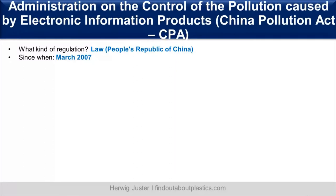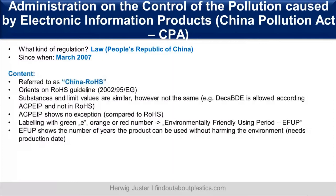The third one is the Administration of the Control of the Pollution Caused by Electronic Information Products, or the China Pollution Act (CPA), commonly referred to as China RoHS. It is a law from the People's Republic of China, established in March 2007. The substances and limit values are similar to RoHS, however not the same — for example, deca-BDE is allowed according to the CPA but not according to RoHS.